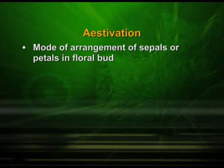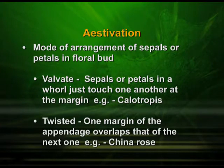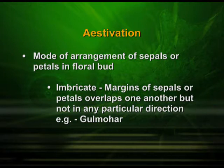The mode of arrangement of sepals and petals in a floral bud is called aestivation. There are different types of aestivation. In valvate aestivation, the sepals or petals in a whorl just touch one another at the margin. In twisted aestivation, one margin of the appendage overlaps that of the other one. In imbricate aestivation, the margins of sepals or petals overlap one another but not in any particular direction — example, gulmohar.